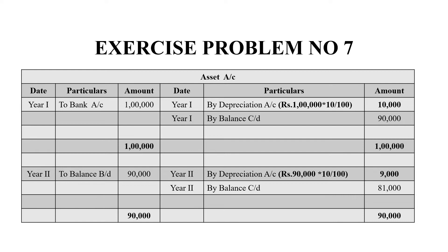Here I have mentioned year 1. Year 1, to bank — the asset has been purchased, given as bank account, that is 1 lakh. The depreciation is 1 lakh into 10 divided by 100, so by depreciation account is 10,000. The balancing figure is 90,000.